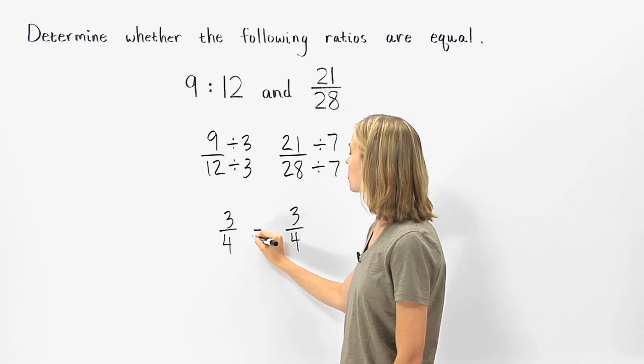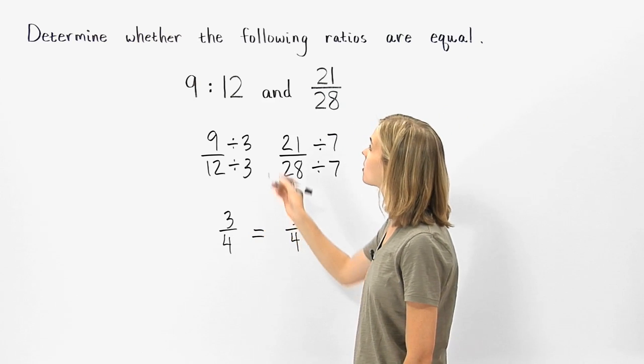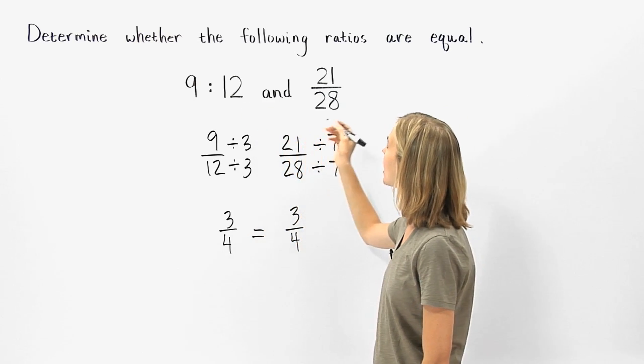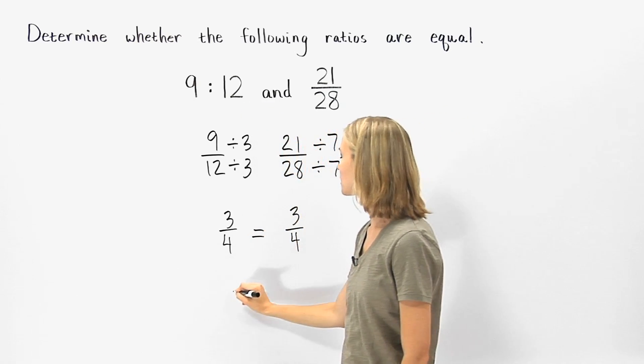Since 3 fourths equals 3 fourths, we know that the ratios 9 to 12 and 21 to 28 must be equal.